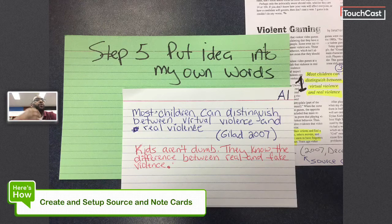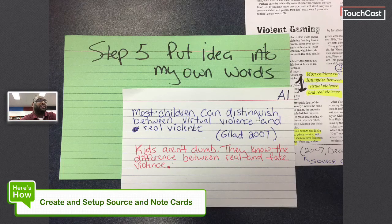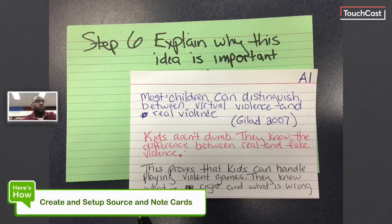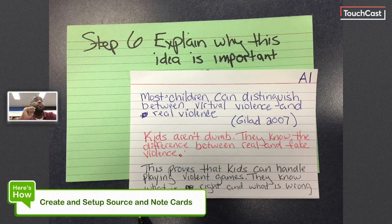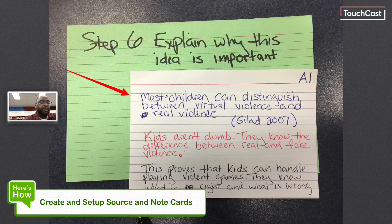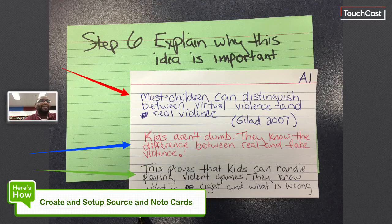My paraphrase here is: kids aren't dumb, they know the difference between real and fake violence. I changed the color — that's a tip I usually use. I write the idea I'm borrowing in one color and the paraphrase in another. Then, what makes this a note card is you're gonna have your analysis: you're gonna put why this idea is important. Notice it's a different color ink. There are three things that need to be on a note card: one is the original idea I'm borrowing, the second is my paraphrase, and the third is some sort of analysis.